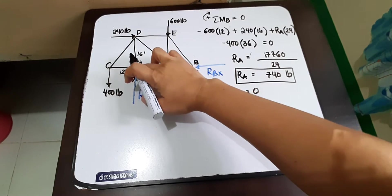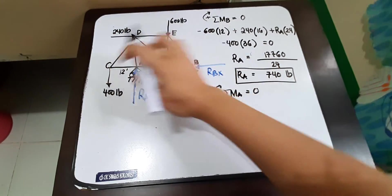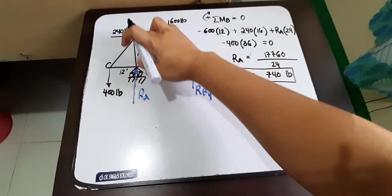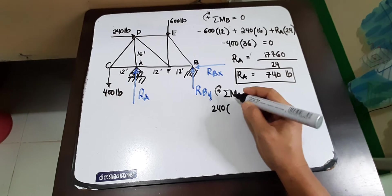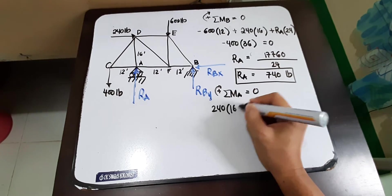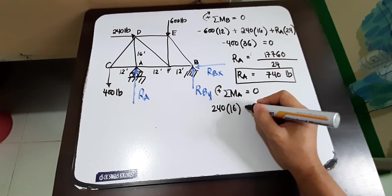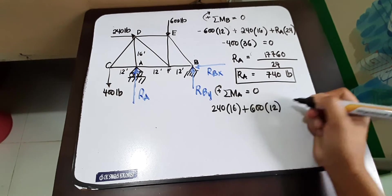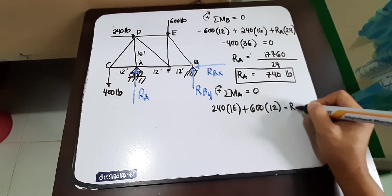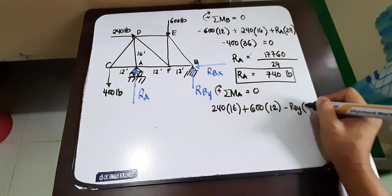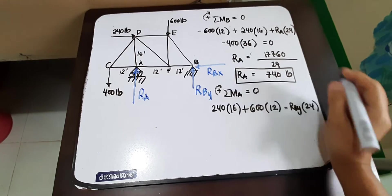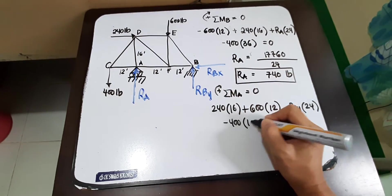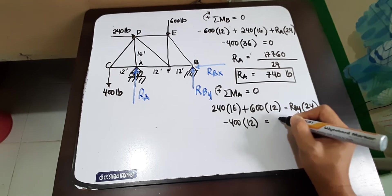So take moment here, we have force one, two, three, and four. This will have a zero moment arm. So we will start with 240 multiplied by 16, having a clockwise. Then we have a plus 600 times 12. Then we have minus RBY times, that is 24. And then we have a minus 400 times 12, equals to zero.